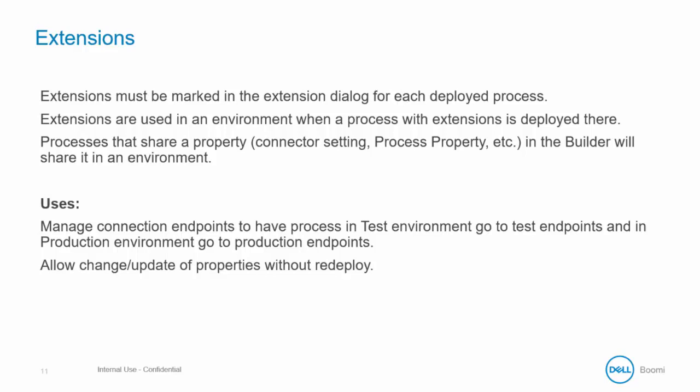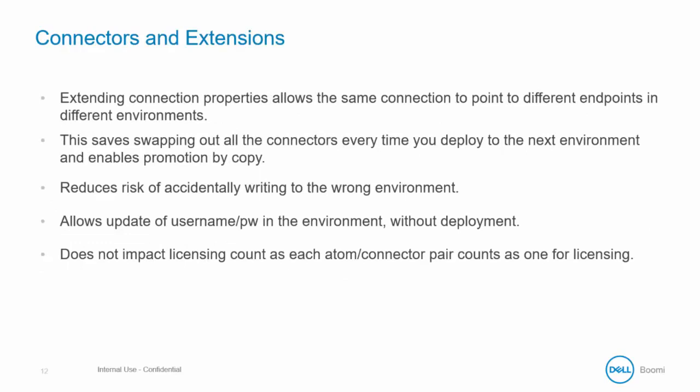Some uses of extensions include managing connection endpoints in different environments, and you can also change or update parameters without redeploying a process. One strategy Boomi recommends is to have a set of connections for each endpoint in the build tab that point to production endpoints — these may be needed to test authorization and to import profiles. Once confirmed, you can swap those production endpoint connections for a connection that acts as a test or sandbox endpoint. The recommendation is to keep one connector per endpoint with extended properties as the deploy connector — putting 'deploy' in the name is a good suggestion. All credentials would be set to null, and you swap to this before deploying so that once deployed it will use the credentials that exist in the environment, not in the process itself.